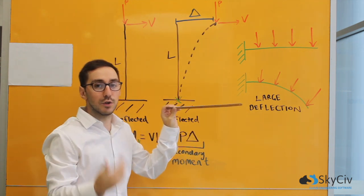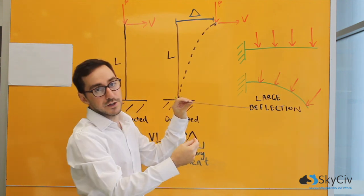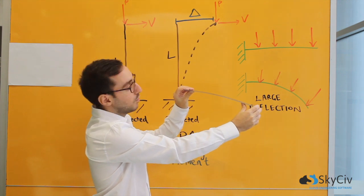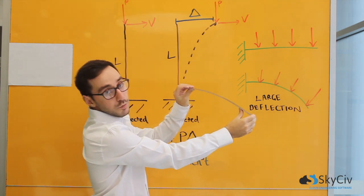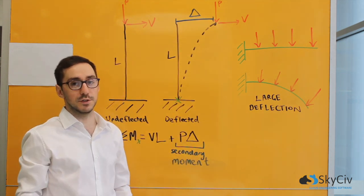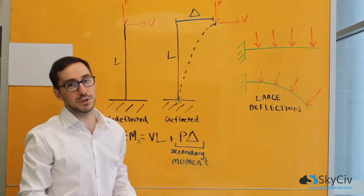Whereas a non-linear analysis will be applying the loads in an iterative fashion. The beam might deflect a little bit, then it will apply the loads a little bit more, and then again. The point is that it's applying the loads to the deformed position of the beam rather than the starting or undeformed position.